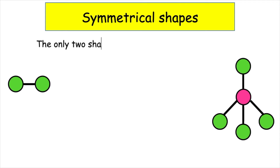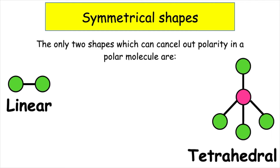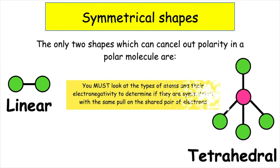The only two shapes which can cancel out polarity in a polar molecule are linear and tetrahedral. You must look at the types of atoms and their electronegativity to determine if they are symmetrical, with the same pull on the shared pair of electrons.